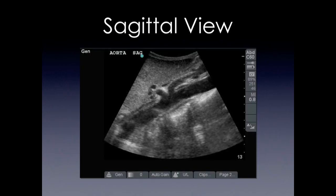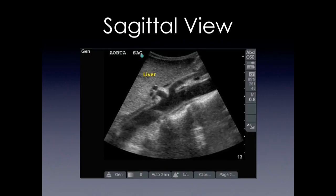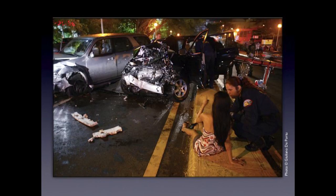Here we have a sagittal view of the aorta. We put the transducer toward the head and you'll see the liver on top, the aorta with the spine line in the inferior portion of your screen, and you're able to see both the celiac and the SMA. So let's talk about the FAST exam.